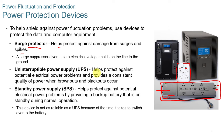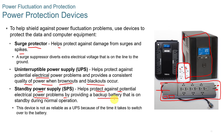UPSs, or Uninterruptible Power Supplies, help protect against brownouts and blackouts by providing battery backup. They will run your computer for a certain amount of time — for example, mine runs for about 15 minutes during a complete power outage, giving me time to shut down properly. A standby power supply also provides battery backup, and most UPSs fall into both of these categories.